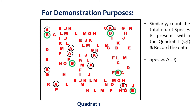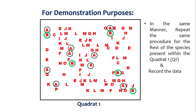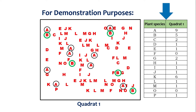Similarly, in the same manner, you count the number of individuals of Species B present in Quadrat 1. Let's say there are 5 individuals, so Species B equals 5. In this same manner, repeat the process for the rest of the other 14 species present within Quadrat 1, and then record the data.